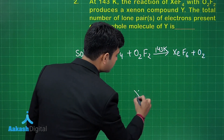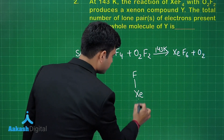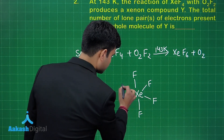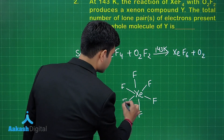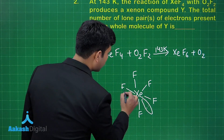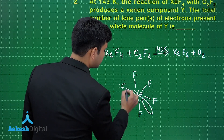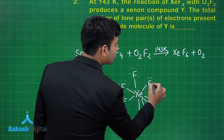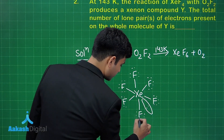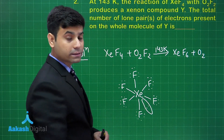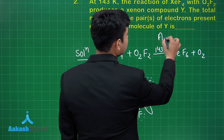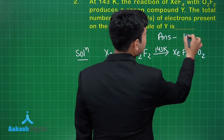We can write XeF6 as this structure. All six fluorine atoms will each have three lone pairs, giving 18 lone pairs on fluorine atoms, and one lone pair on xenon — so total 19 lone pairs. Hence the correct answer for this question is 19.00.